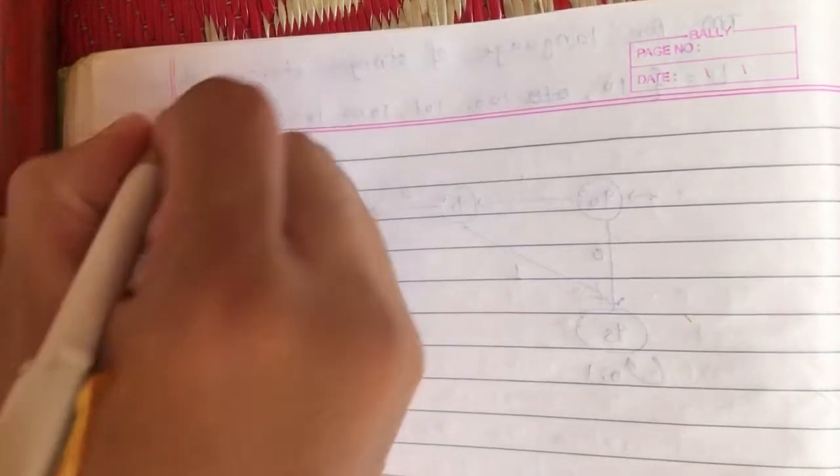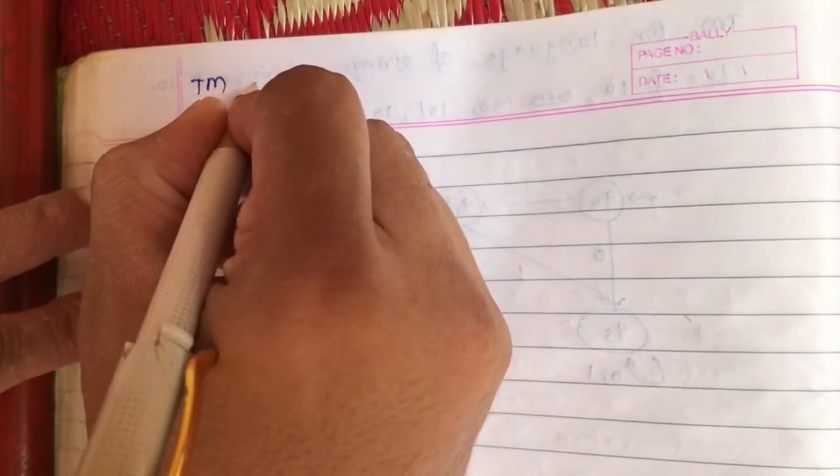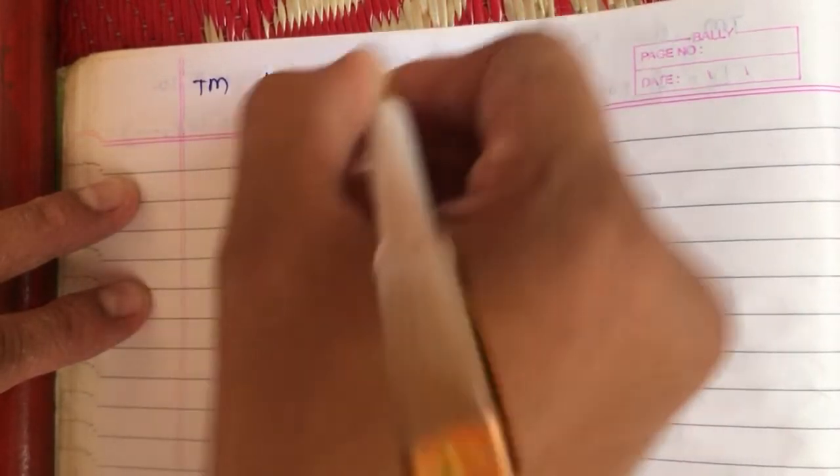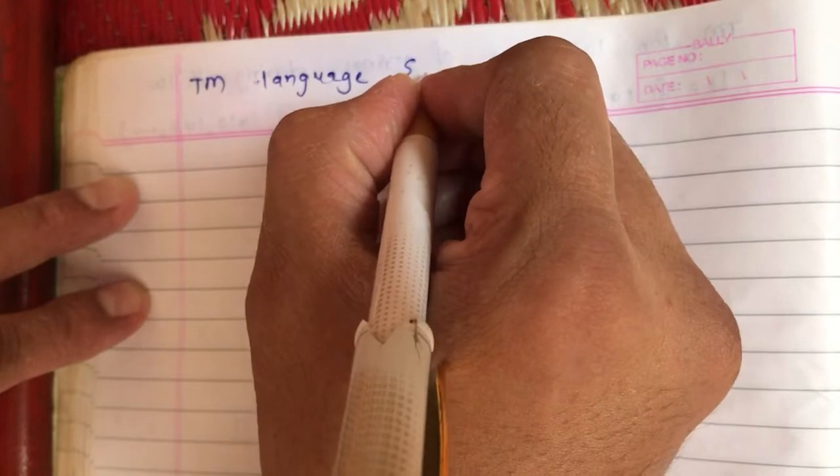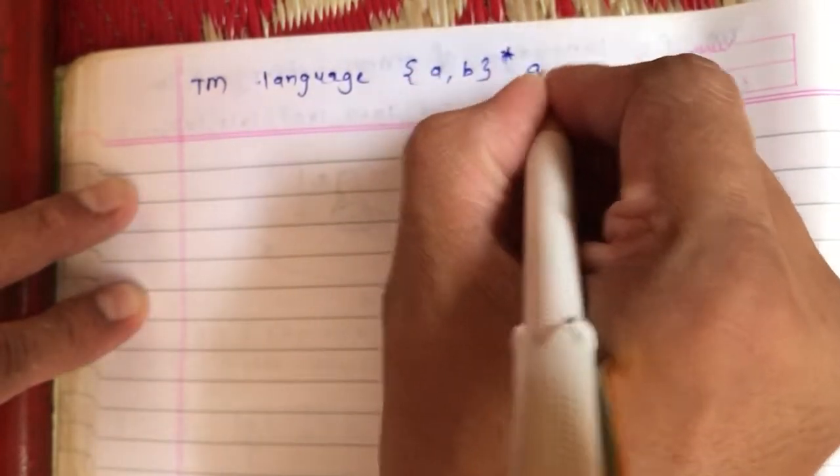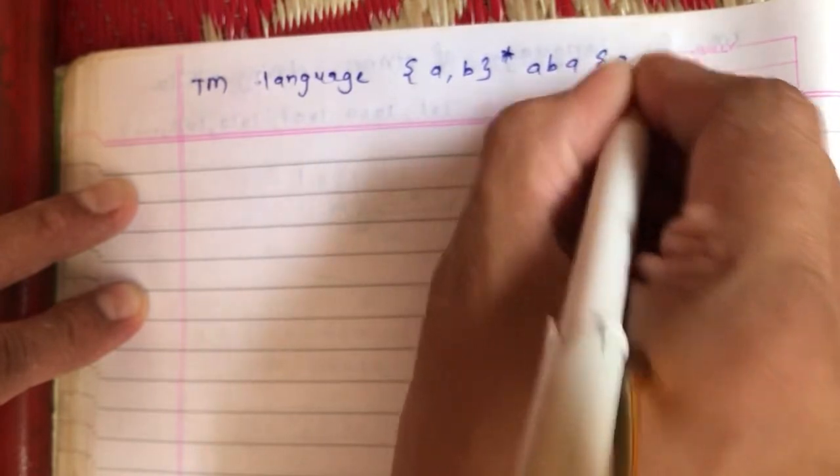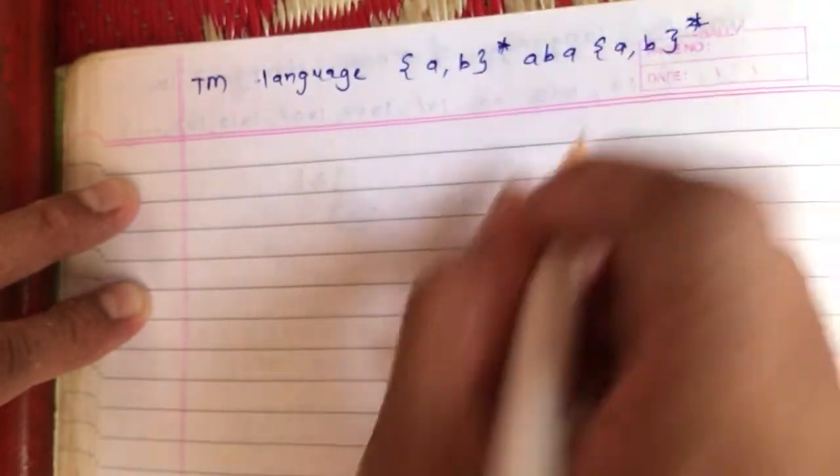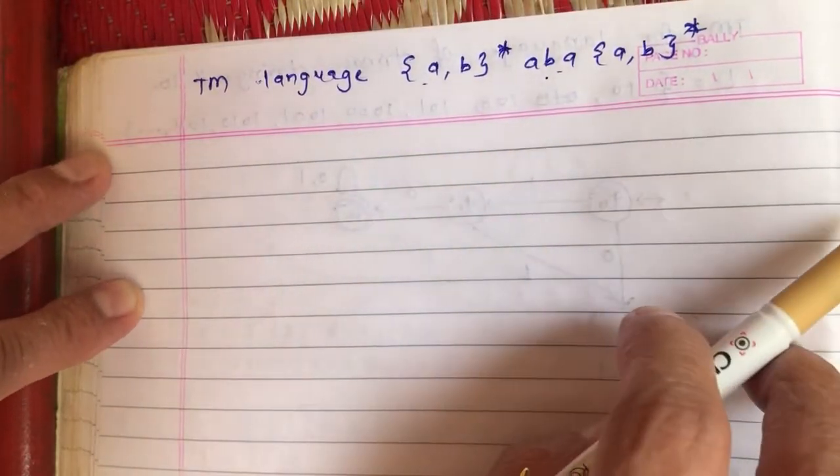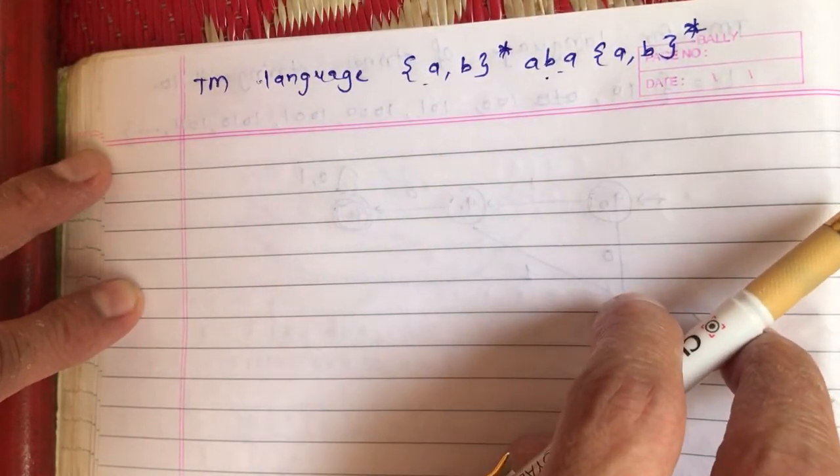In this video we are going to construct a Turing machine for the language of strings containing aba as substring. If aba is a substring, you can have any combinations of a's and b's at the start and at the end.